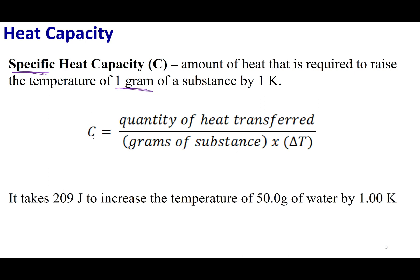The specific heat capacity is going to be abbreviated with a capital C, and it equals the amount of heat over the grams over the change in temperature. Let's say I go into lab, take 50 grams of water, raise it by one degree Kelvin, and it takes 209 joules of energy. Let's go ahead and calculate the specific heat capacity of liquid water.